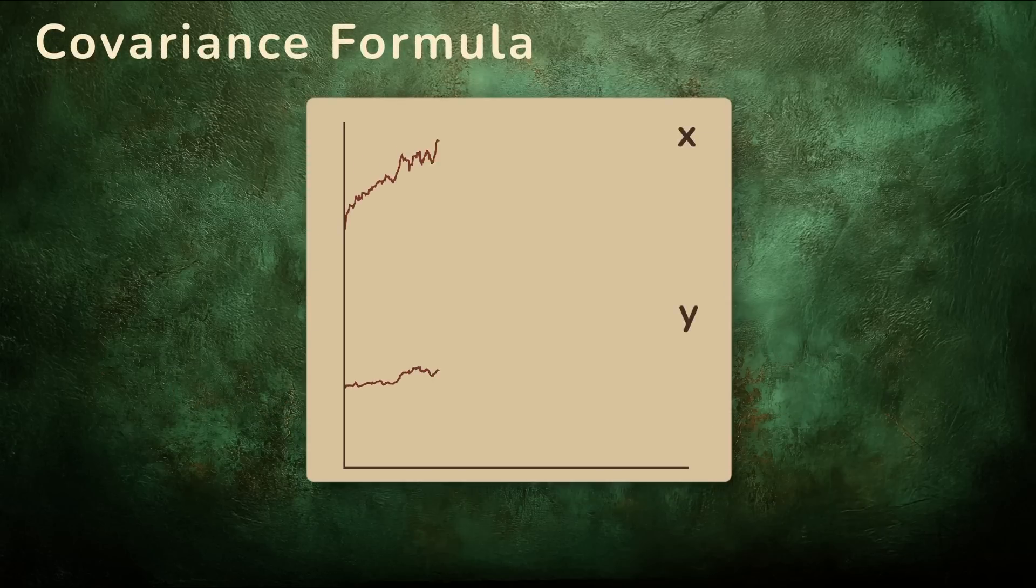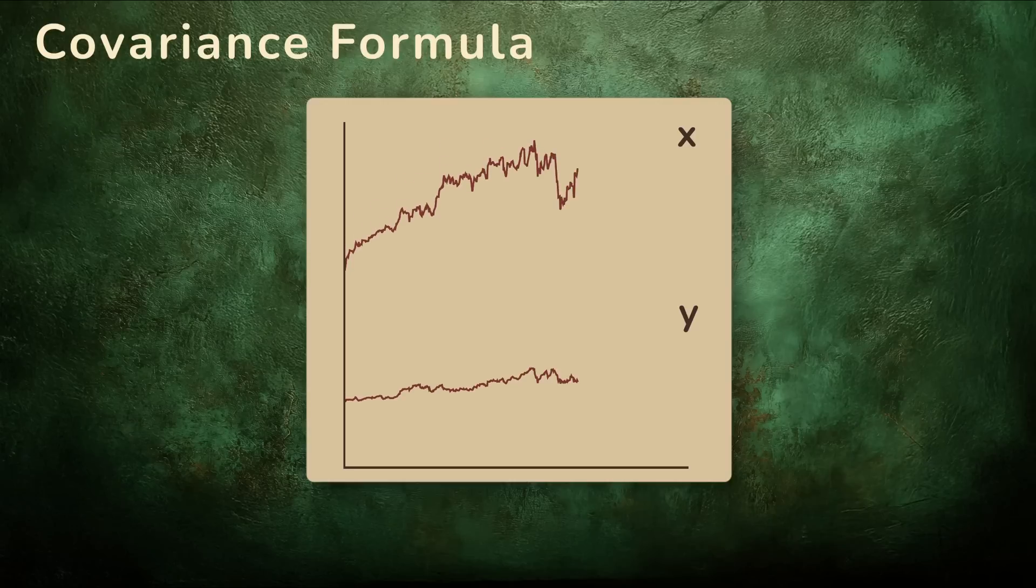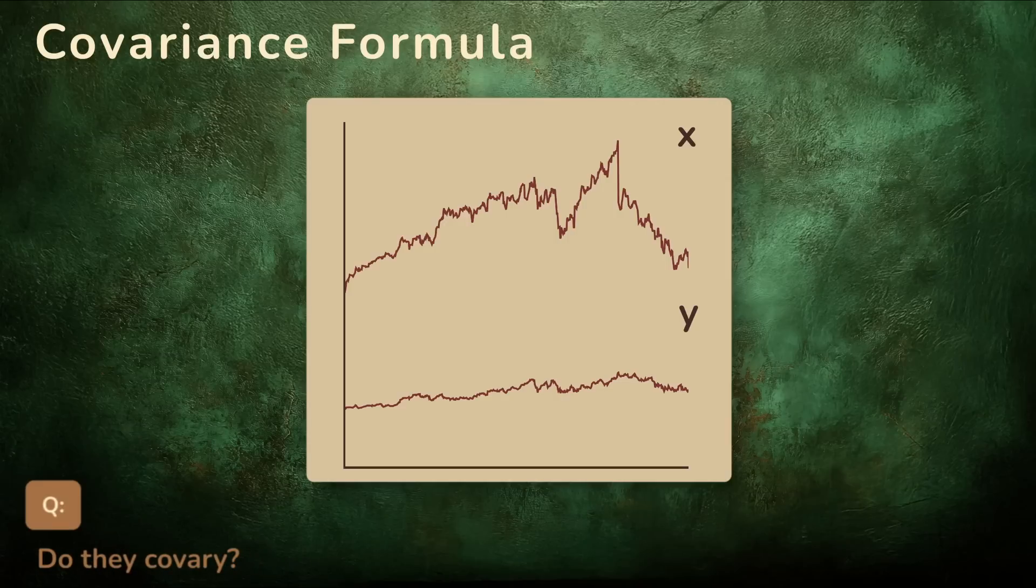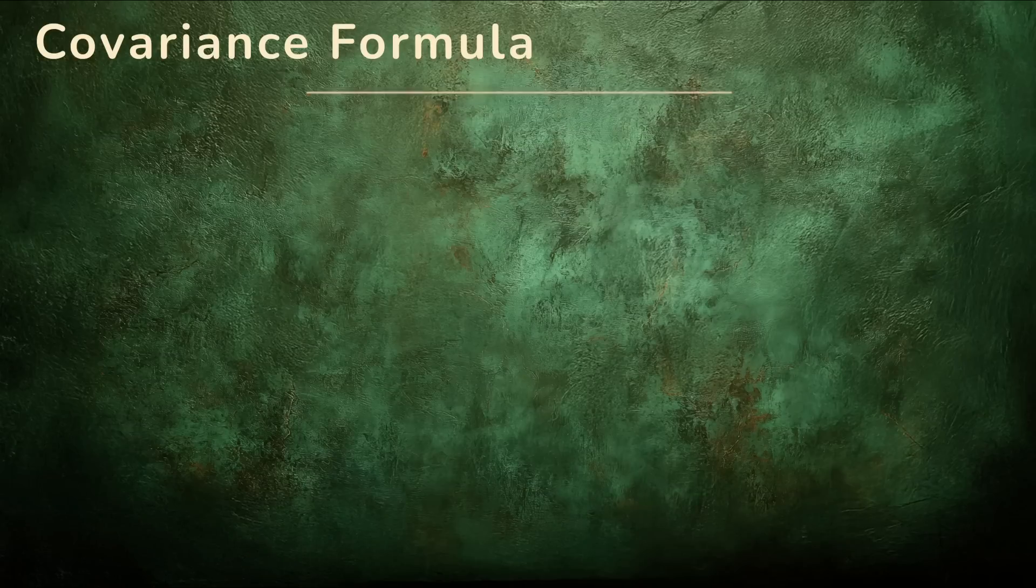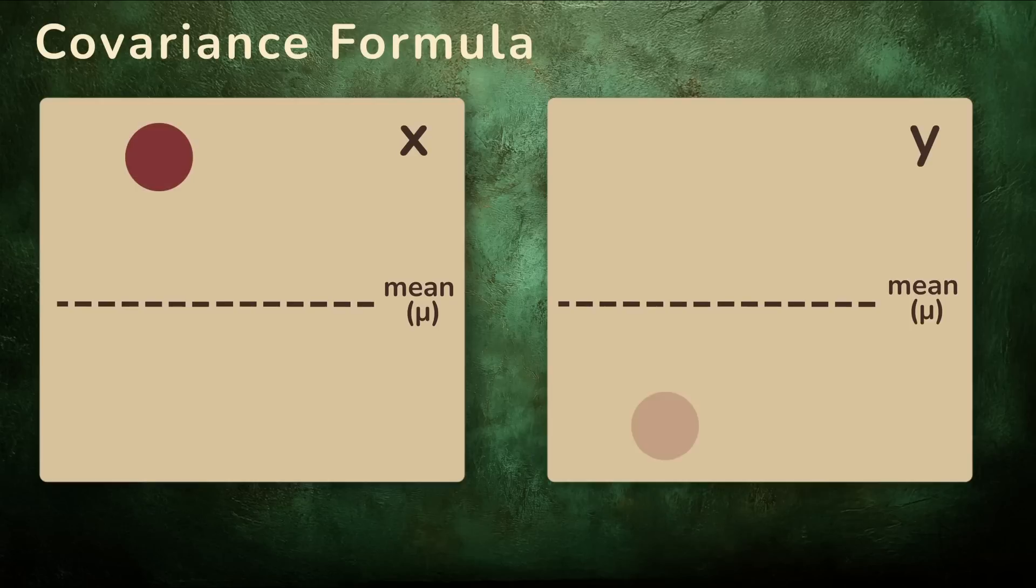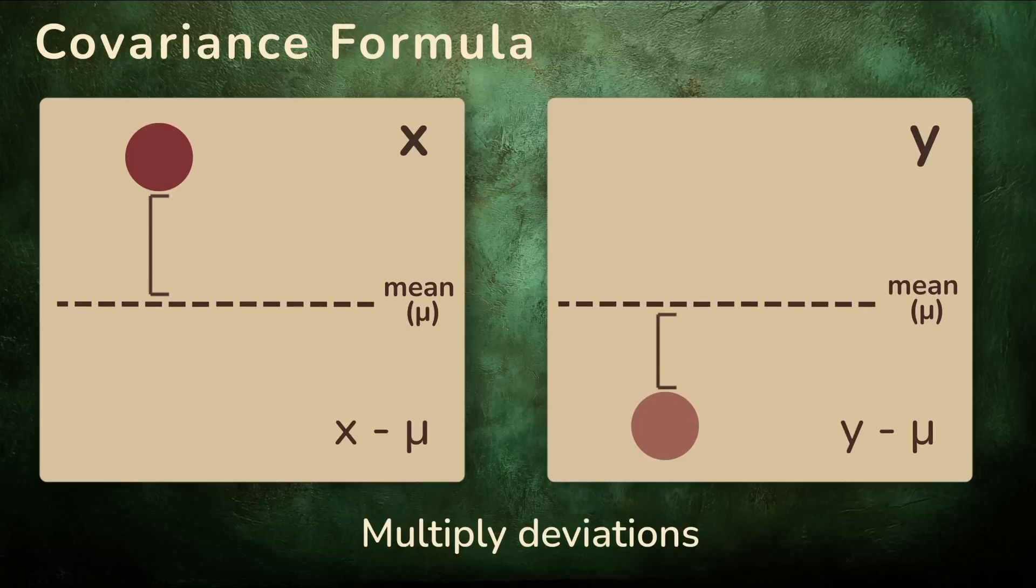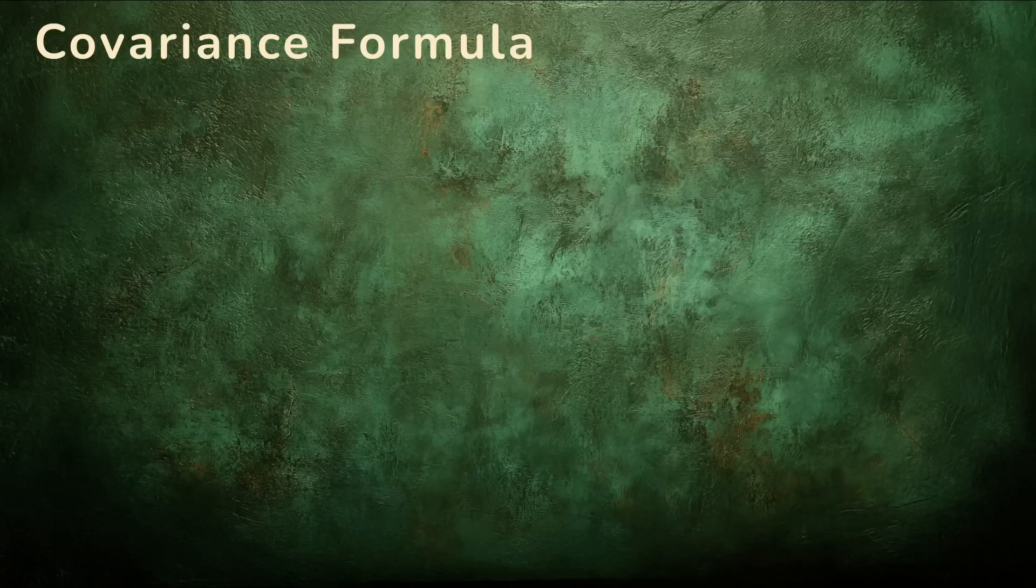Imagine we have two sequences of data, which we'll call X and Y, recorded over the same period. We want to know if these two variables co-vary. That is, if they tend to move together. When we say co-vary, we mean are they above or below their respective averages at the same time. For each pair of points, we look at how much each value deviates from its mean. That is, we subtract the mean from each value. We then multiply these deviations together.